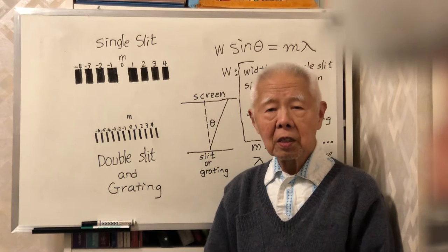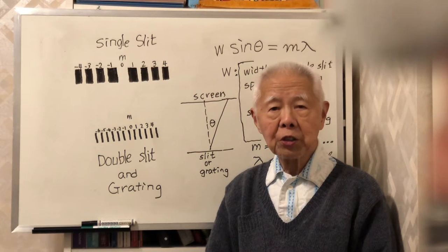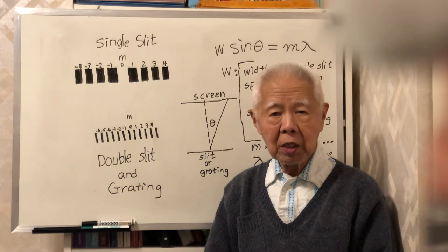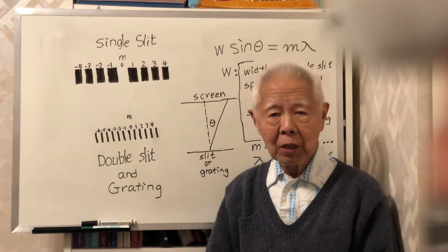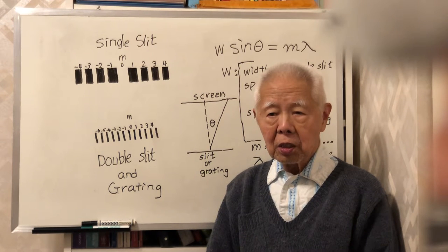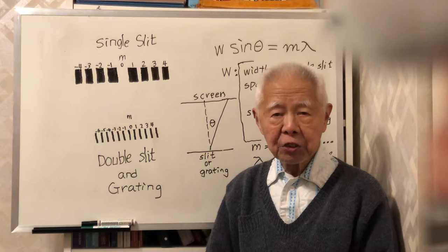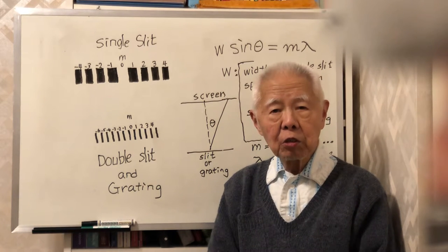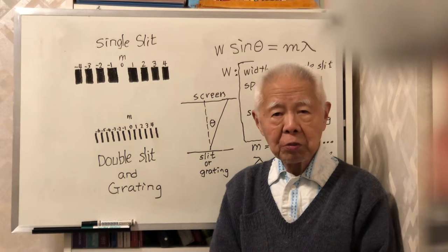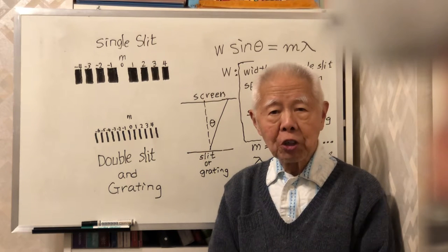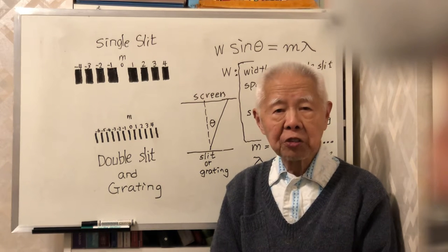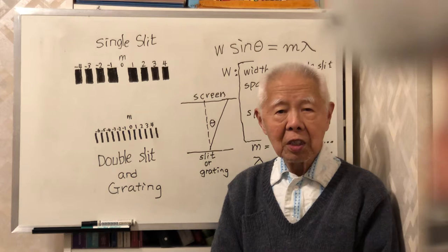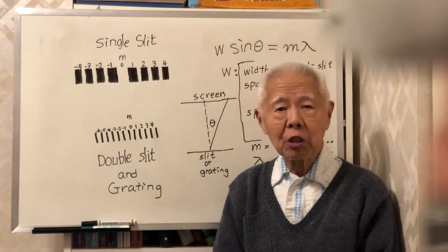Today we are going to make a summary of interference and diffraction. We have three cases: single slit diffraction, double slit interference — which is also known as Young's double slit experiment — and the third case is a diffraction grating.